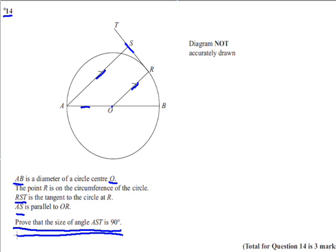So I'm just going to mark in angle AST as 90 degrees. Remember it's always a letter in the middle, so you're going to need some circle theorems.